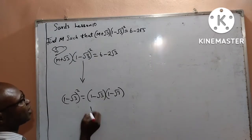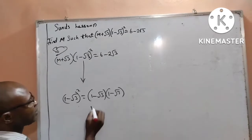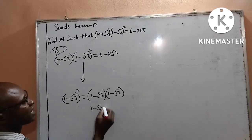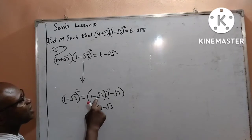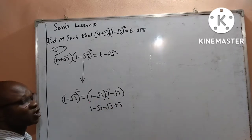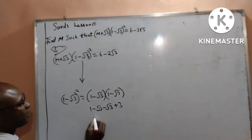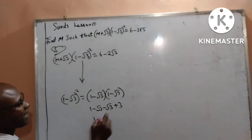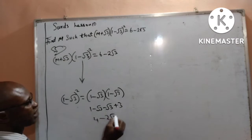1 times 1 will give me 1. 1 times minus root 3 will give me minus root 3. Minus root 3 times 1 will give me minus root 3. Minus root 3 times minus root 3 will give me plus 3. So 1 plus 3 gives me 4, and minus root 3 minus root 3 gives me minus 2 root 3.